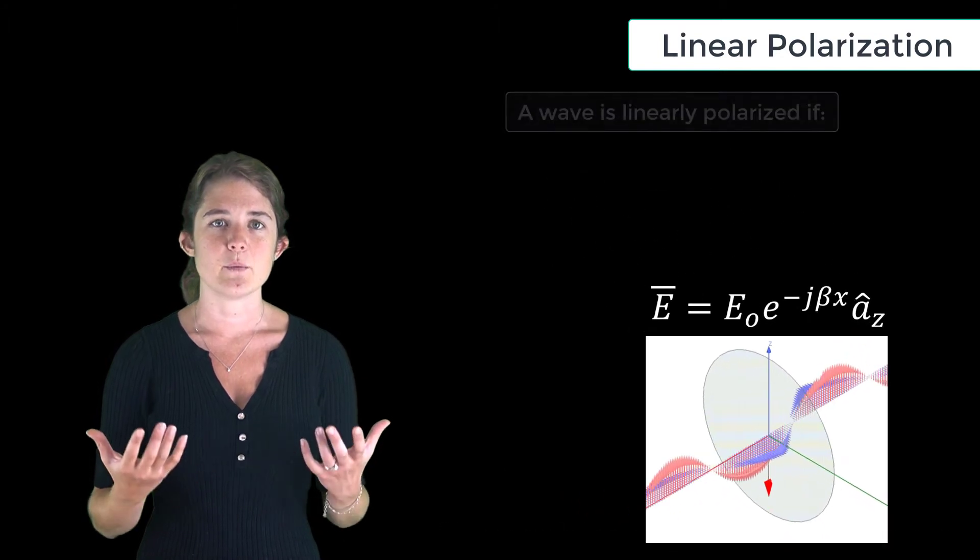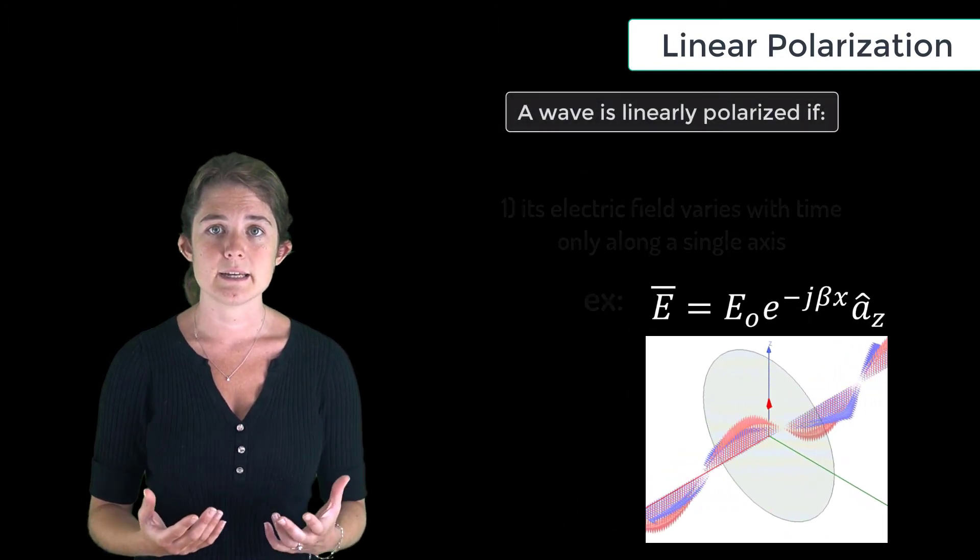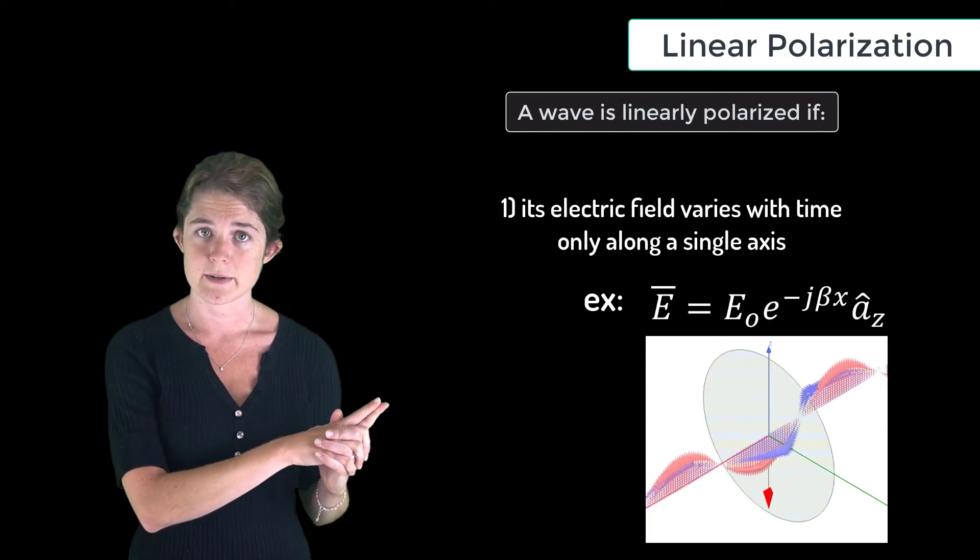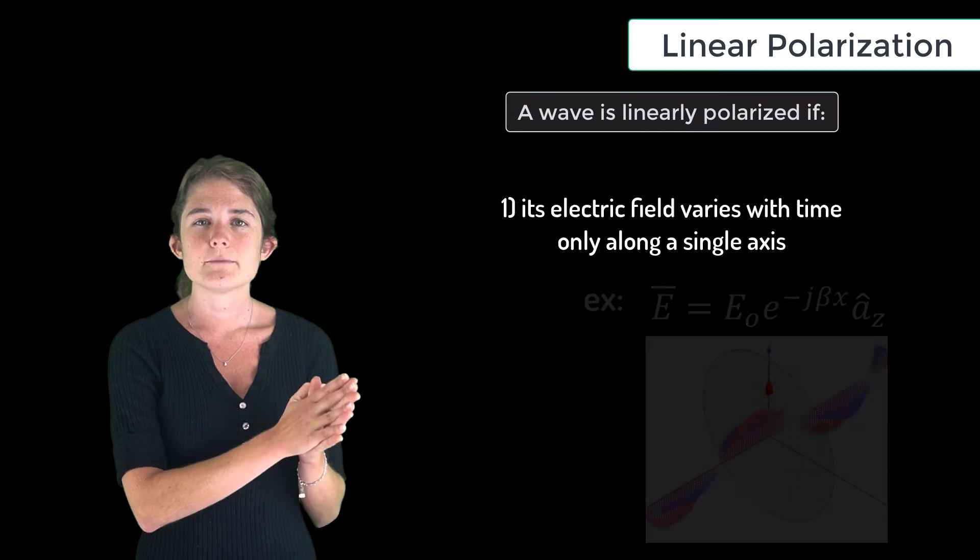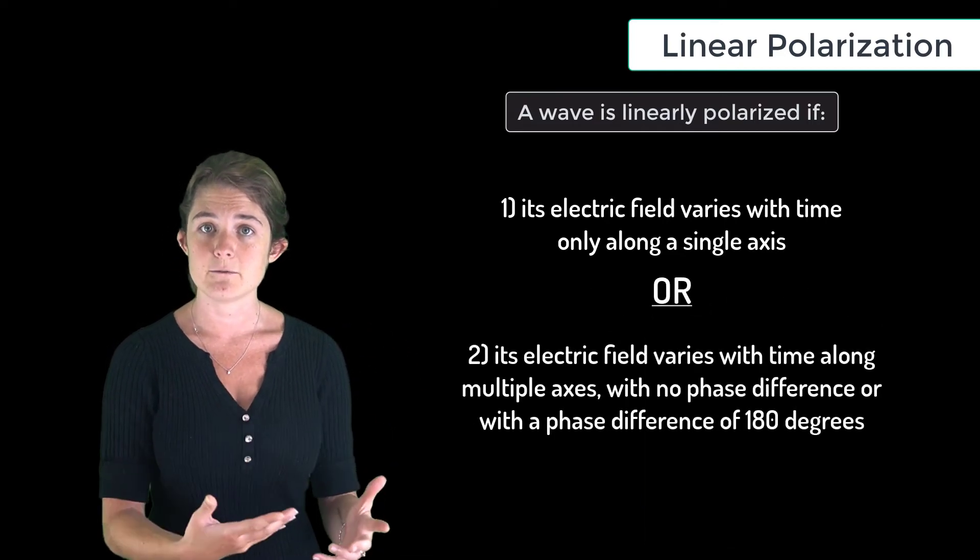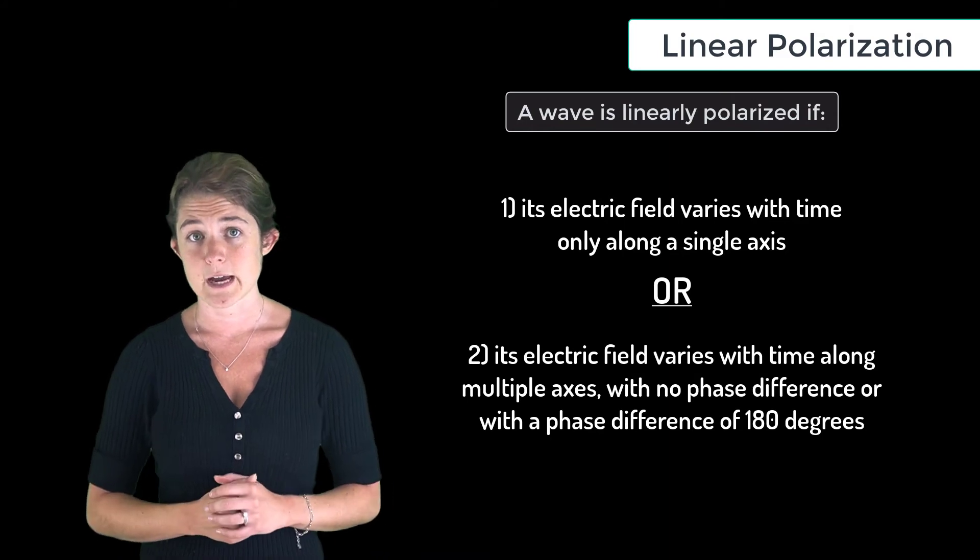Mathematically speaking, a wave is linearly polarized any time it consists of temporal variation along a single axis, as in this case where it varies along z, or if it varies along multiple axes with the various components being either in phase or 180 degrees out of phase.